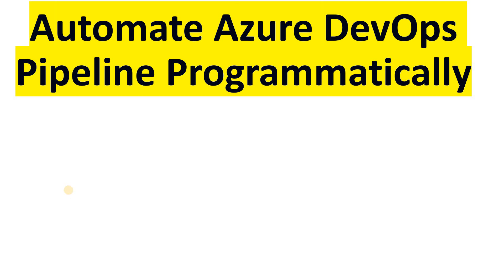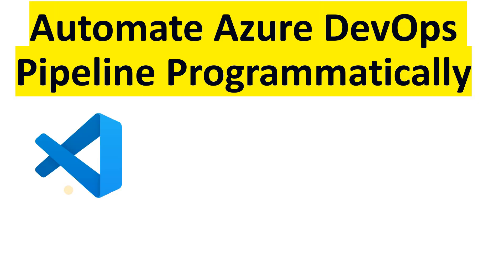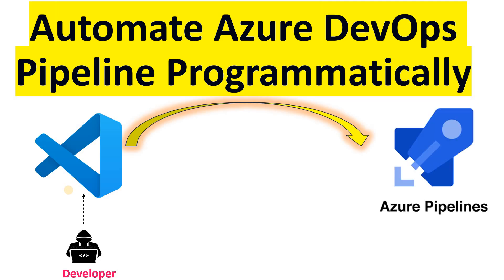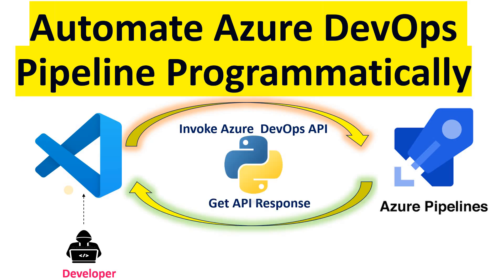In this video we will see how to automate Azure DevOps Pipeline programmatically. Here we will use VS Code to build a script that interacts with the Azure DevOps Pipeline using APIs. Microsoft Azure DevOps has provided APIs and keeps on releasing new ones. We will see how to invoke those APIs and build a script to automate tasks around Azure DevOps Pipelines.